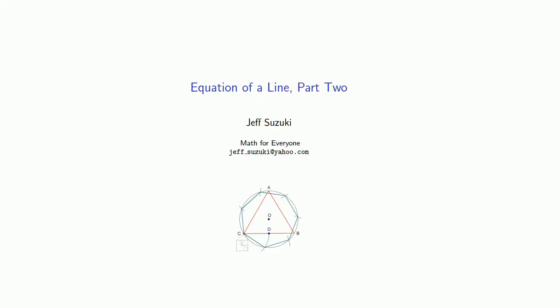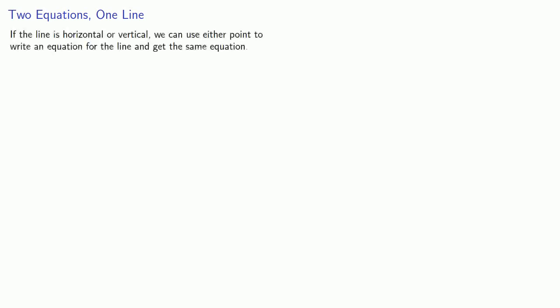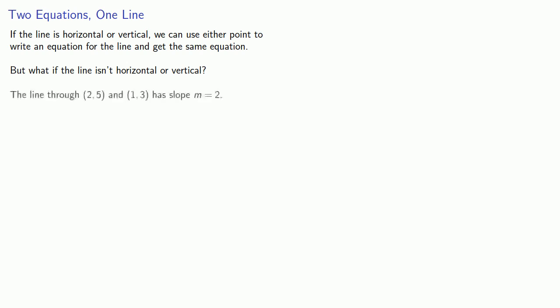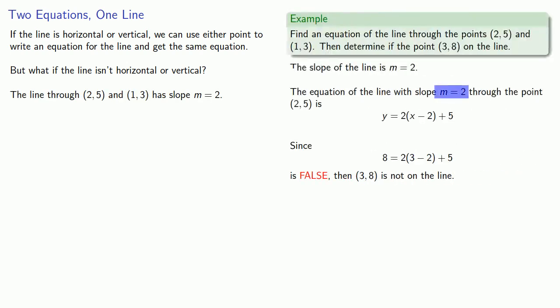Let's take a look at another form of the equation of a line. If a line is vertical or horizontal, we've seen that we can use either point to write an equation for the line and get the same equation. But what if the line isn't horizontal or vertical? If we consider the line through (2, 5) and (1, 3), we found the slope and then wrote down the equation of the line using the point (2, 5).